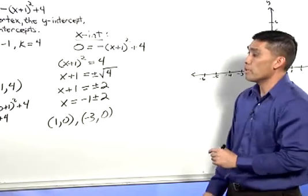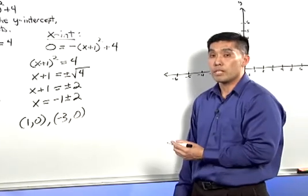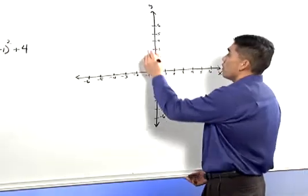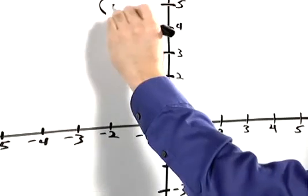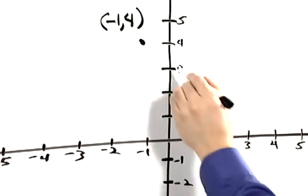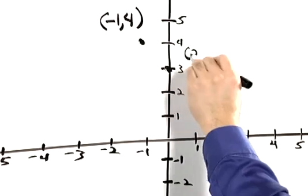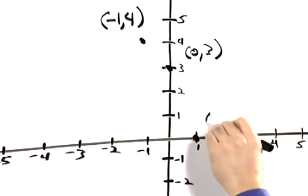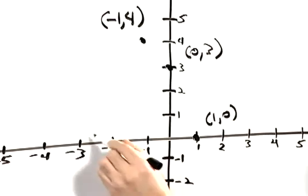Now we have all the important information, we can plot these points. First the vertex, negative 1, 4, the y-intercept, 0, 3, and the x-intercepts, 1, 0, and negative 3, 0.